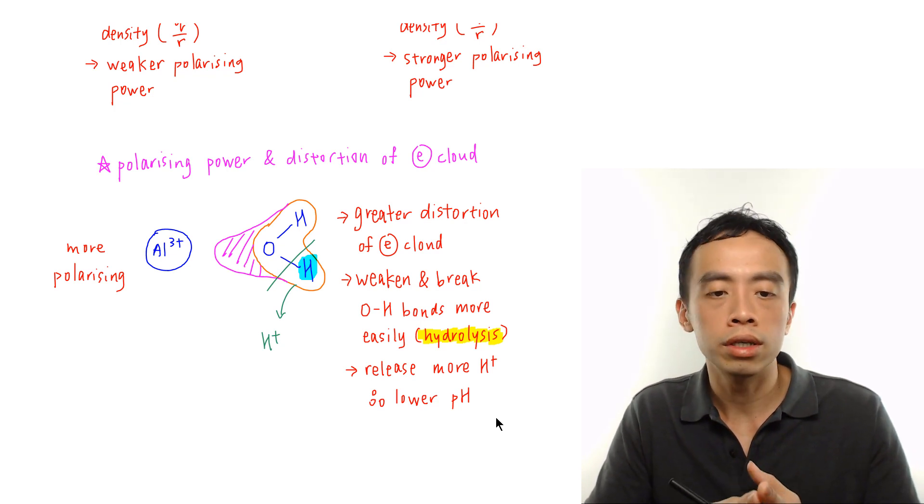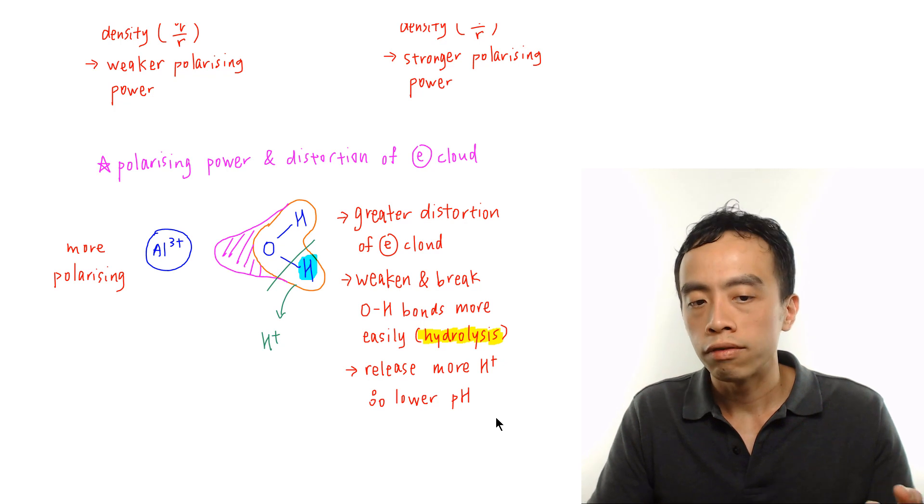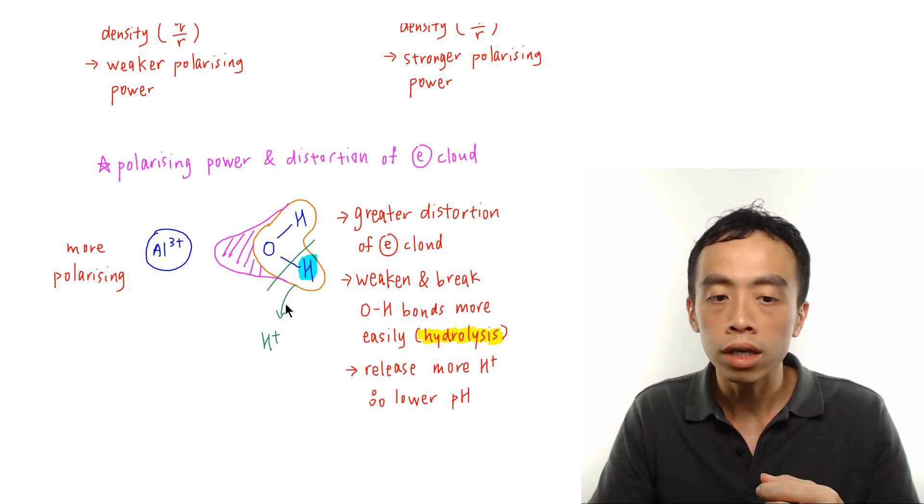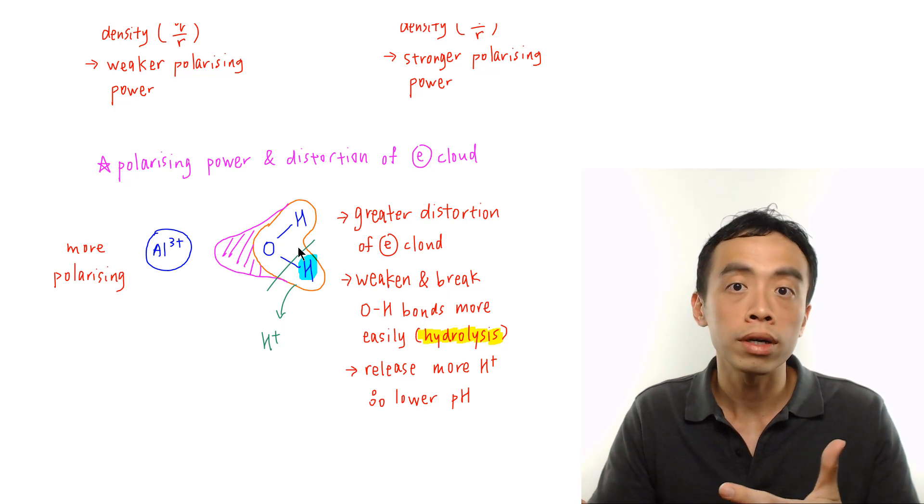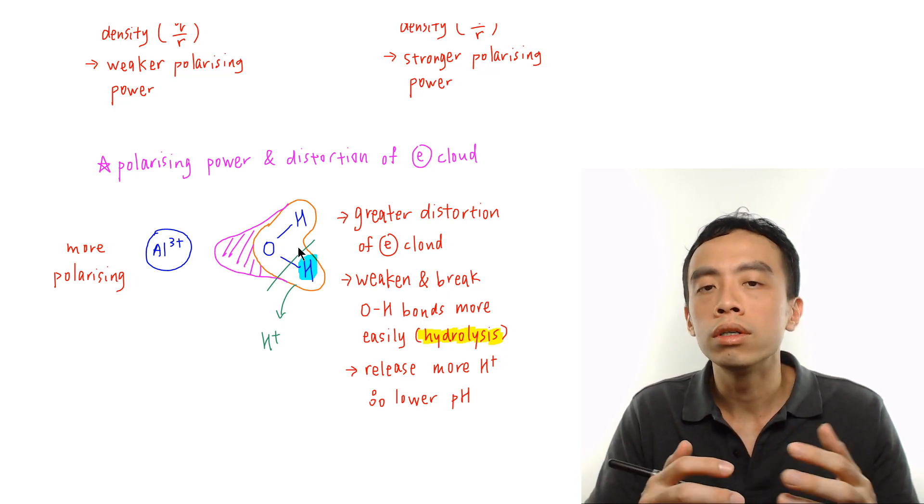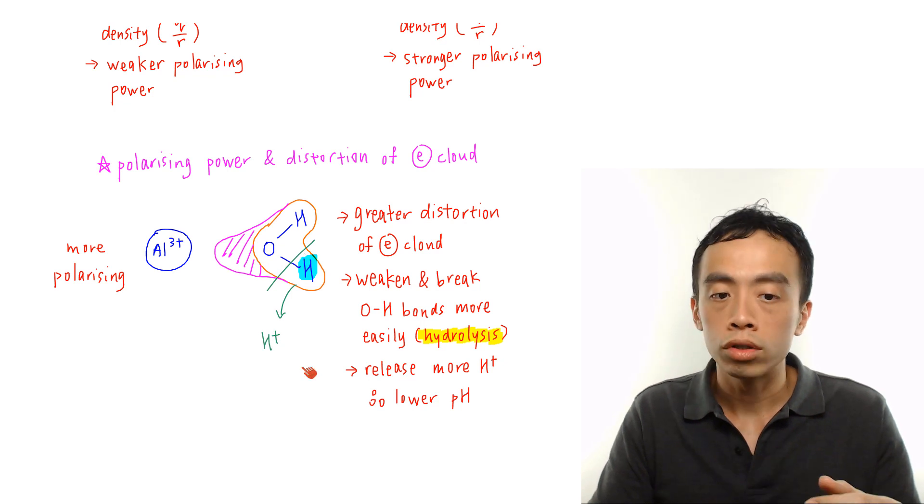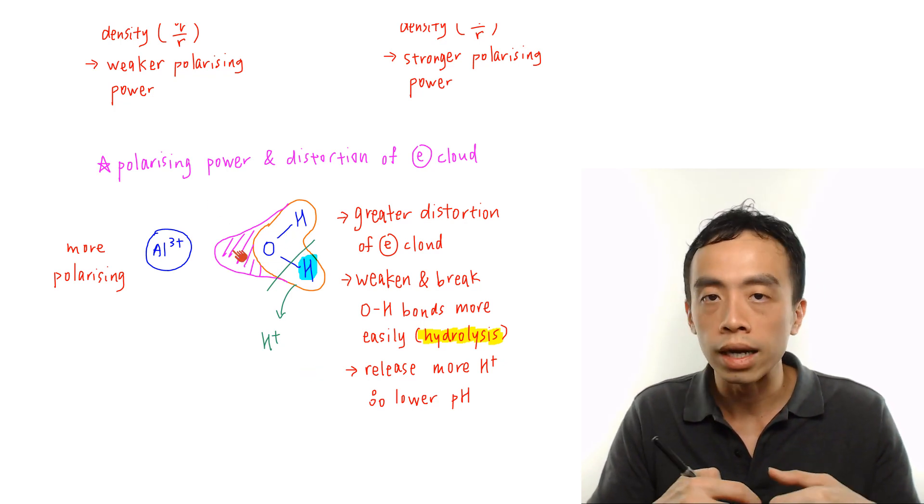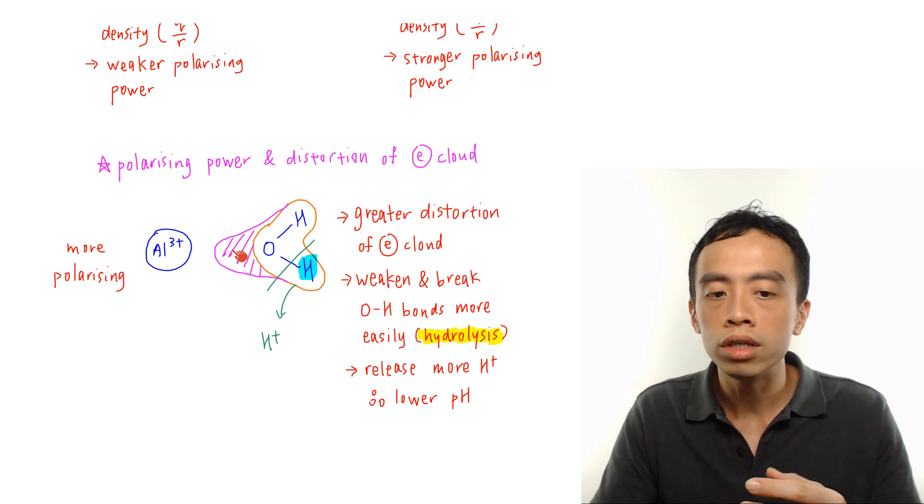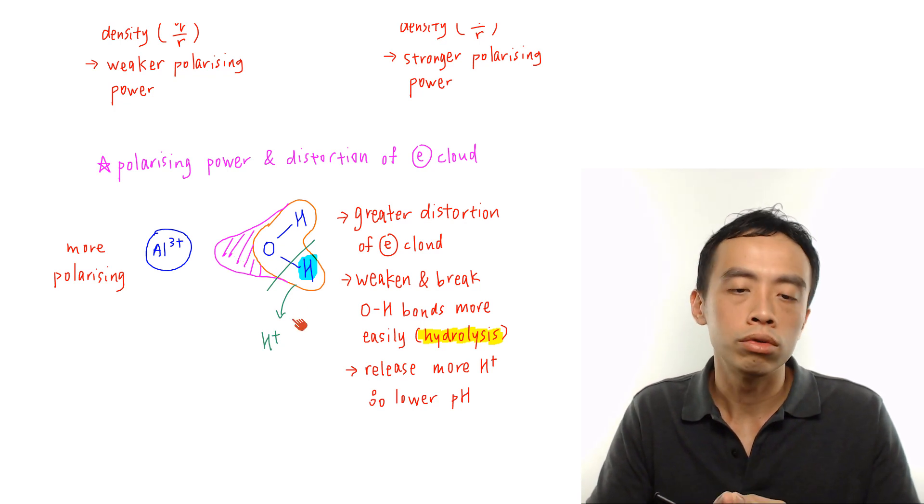Now one thing interesting is some of us might be thinking if I break this OH bond then I release H+, I will still have OH-, then wouldn't the concentration of H+ and OH- stay the same, then wouldn't the solution remain as neutral. So this OH- is negatively charged, it will attract this positive Al3+. So it doesn't release the OH-, it only releases the H+ into solution.